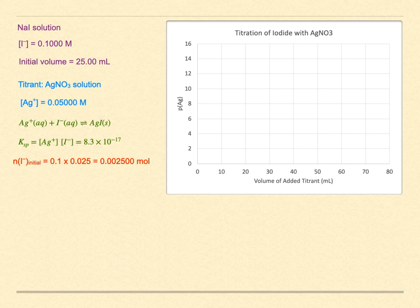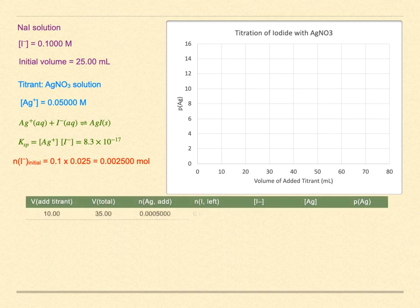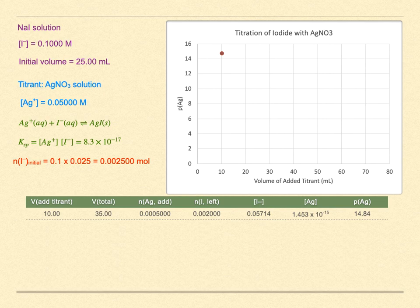In the region before the equivalence point, we have to account for three things: reaction, solubility, and dilution. Consider the addition of 10 milliliters of titrant. The total volume is now 35 milliliters, so we will have dilution from that. The moles of added silver is 0.01 liters times 0.05 molar, or 0.0005 moles. This reacts with an equivalent amount of iodide. The iodide left over is 0.0025 minus 0.0005, or 0.002 moles. When divided by the volume, this gives an iodide concentration of 0.0571 molar. Any silver is present because of solubility of the precipitating silver iodide. Using Ksp with this value for the iodide concentration, the silver ion concentration is 1.45 times 10 to the minus 15 molar, giving a PAg of 14.84.